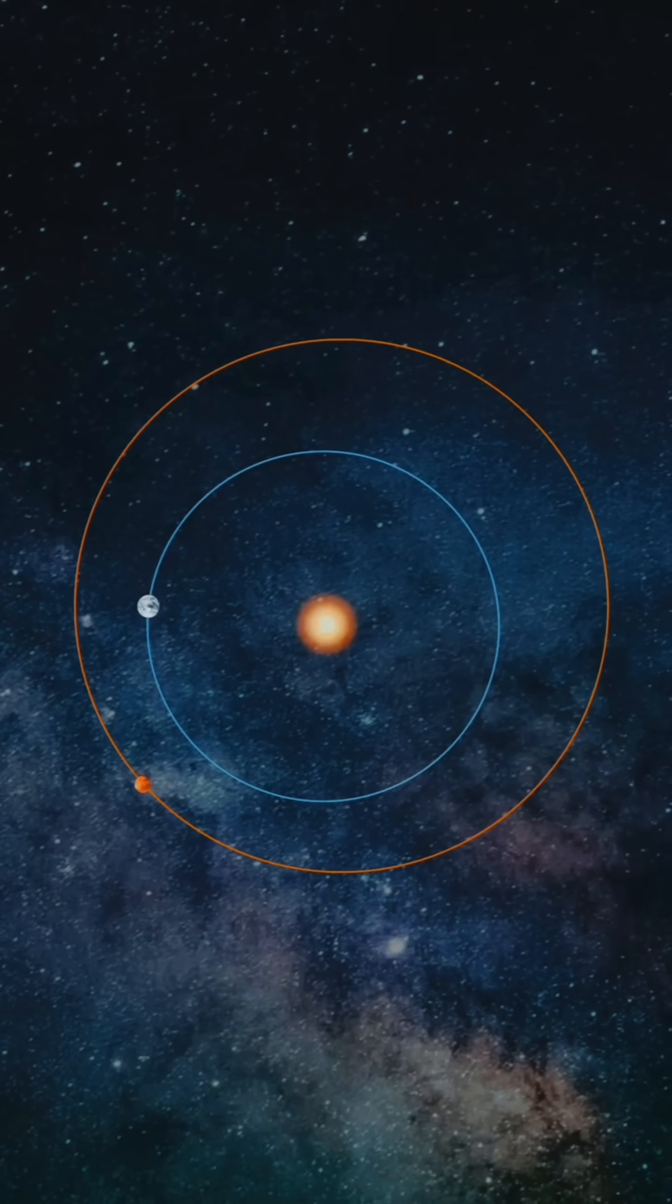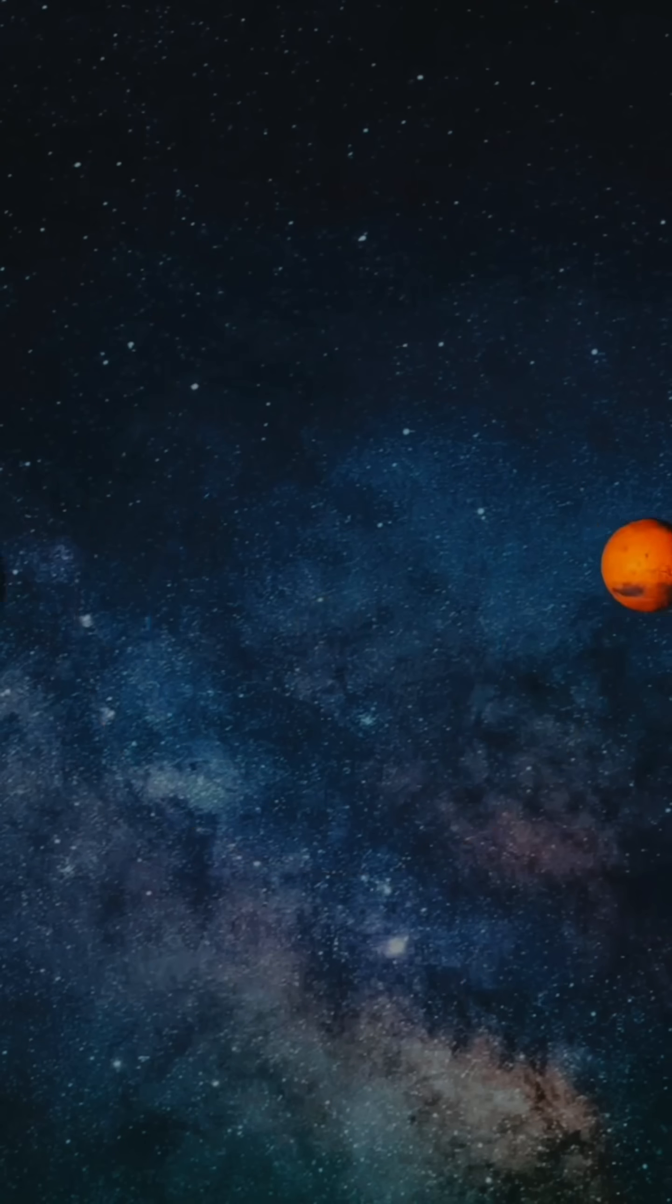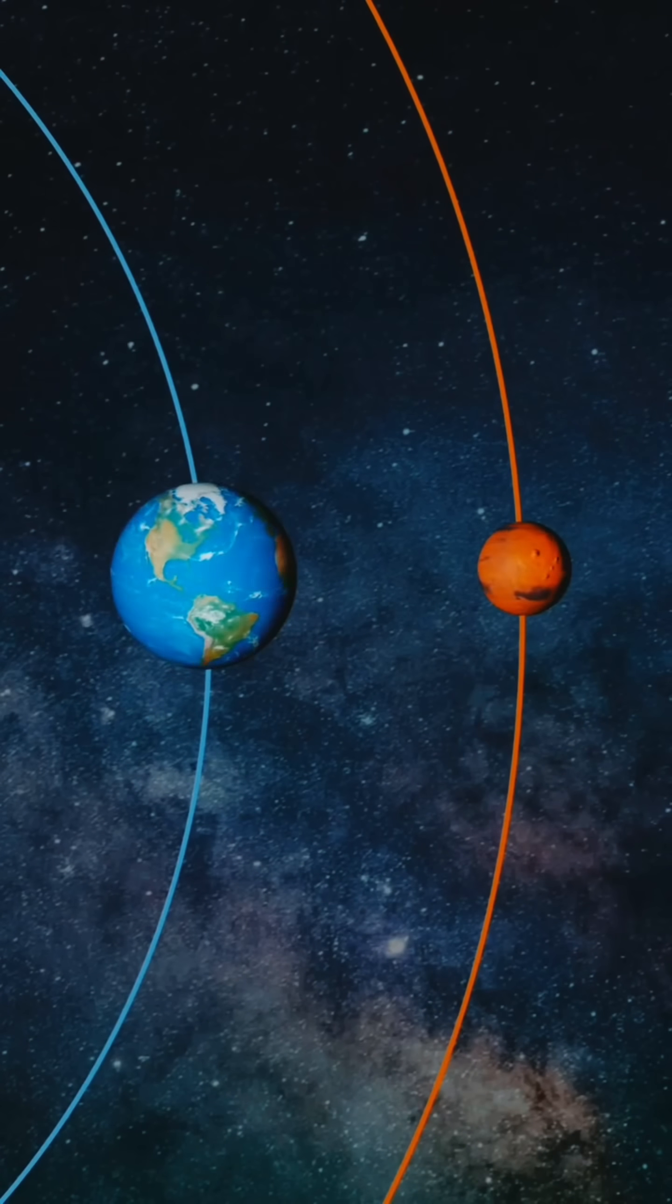As a result, the optimal time to send a spacecraft to Mars would occur once every 26 months, when the planets are closer to each other.